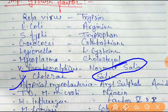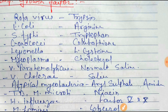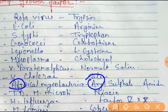Next is atypical Mycobacterium. The growth factor for atypical Mycobacterium is aryl amides. You can remember it easily — Atypical, Aryl, and Amides all start with the letter A.